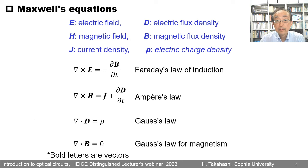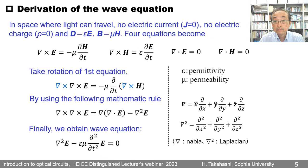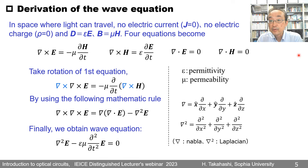As you know, Maxwell's equations are composed of four equations: Faraday's law of induction, Ampere's law, Gauss's law, and Gauss's law for magnetism. In space where light travels, there is no electric current, no electric charge, and D equals epsilon E, B equals mu H. So the four equations become simplified forms, with two of them equal to zero.